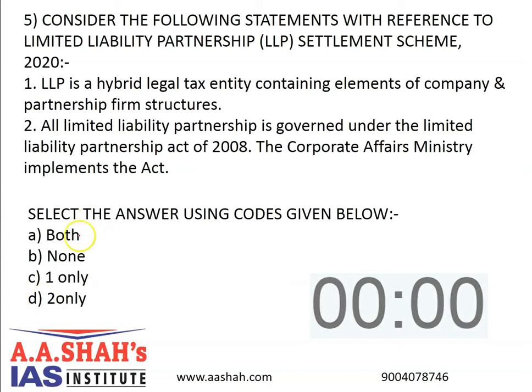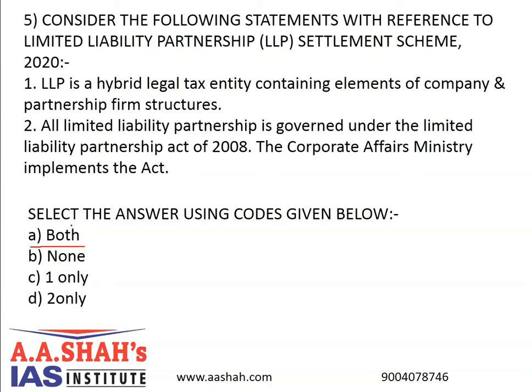The correct answer is A: Both. The LLP Settlement Scheme allows a one-time condonation of delay in filing statutorily required documents with the registrar and to gain immunity from prosecution. Condonation meaning implied pardon of an offence by treating the offence as if it had not been committed. The scheme came into force on 16th March 2020 and shall remain in force up to 13th June 2020. This is part of government efforts to promote ease of doing business. A difference between LLP and Joint Stock Company is that the internal governance structure of a company is regulated by statute, i.e. the Companies Act of 1956, whereas for LLP it is done by contractual agreement between partners.